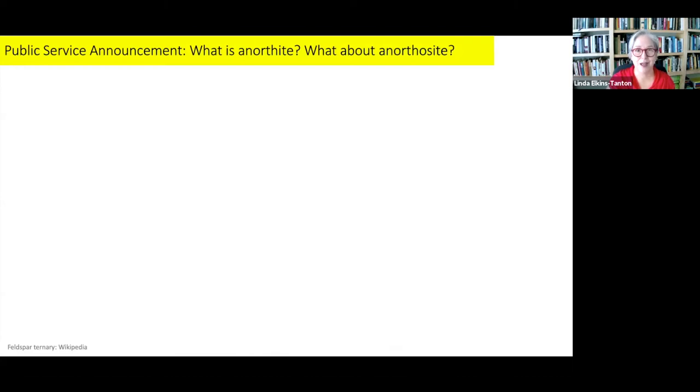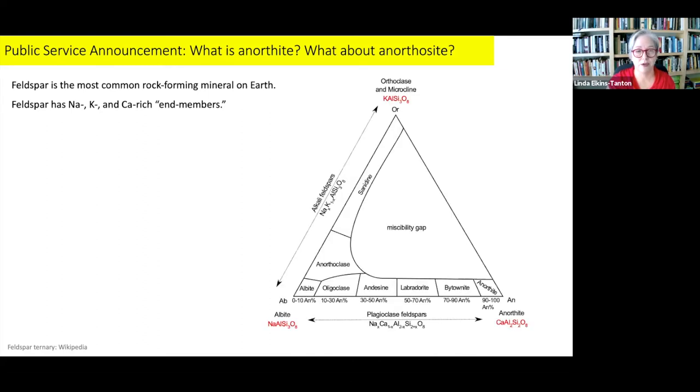So here's a public service announcement: What is anorthite and what about this word anorthosite? Well, feldspar is the most common rock-forming mineral on earth and occurs on all the rocky planets as well. Feldspar has sodium, potassium, and calcium-rich end members as shown in this triangle. You can see there can be chemical mixtures between the potassium and sodium end members and between the sodium and calcium end members along the bottom.